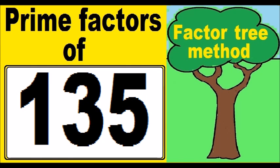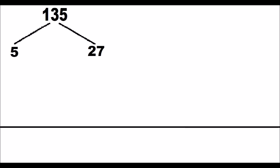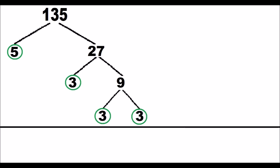Hello. Finding the prime factors of a number using the Factor Tree method is based on dividing the initial number into different branches until all the prime factors are obtained. In this case, we evidence all the prime factors with circles.